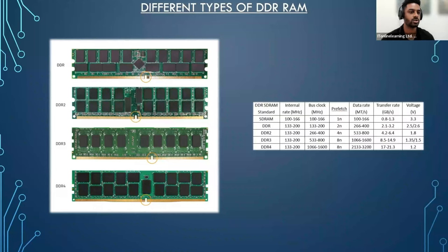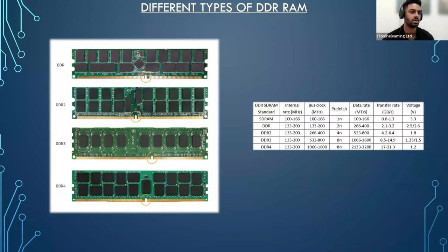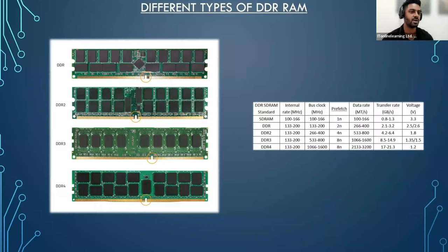This is what all DDR generations have in common. But each new generation has implemented changes and improvements that make them technically very different. DDR1 launched in 2000 and didn't start to be widely used until almost 2002. It operated at 2.5 and 2.6 volts, and its maximum density was 128 megabytes, later expanding to a highest capacity of one gigabyte with a speed of 266 MT/s.